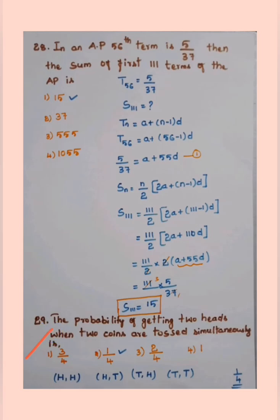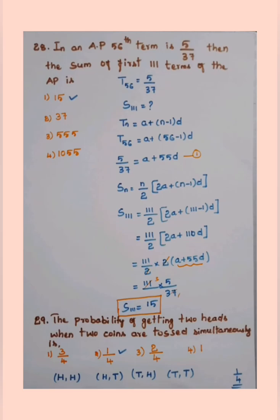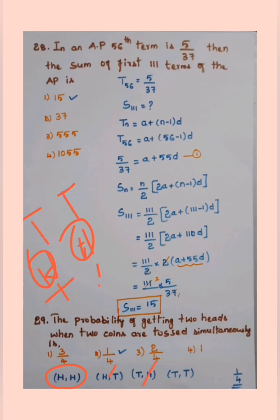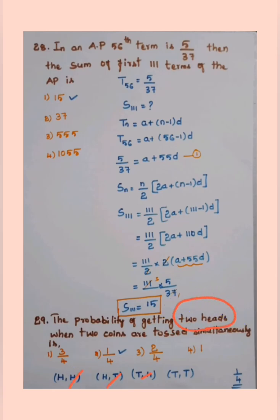Next: the probability of getting two heads when two coins are tossed simultaneously. When two coins are tossed, the possible outcomes are: HH, HT, TH, TT — four outcomes in total. We want both heads, which is just one outcome (HH). So the probability is 1/4. Option 2, one by four, is the correct answer. In the following classes we'll take some dedicated lessons on probability.